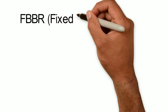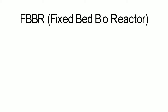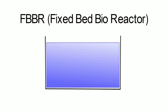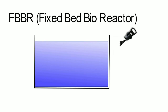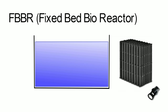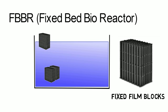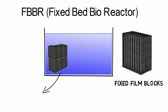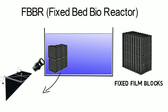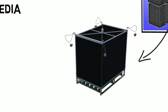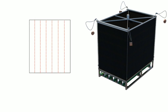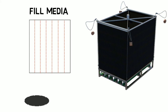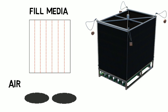FBBR — fixed bed bioreactors — work very similarly to MBBRs, with the difference that the biofilm is attached to fixed fill media blocks. The fill media blocks are usually arranged as submerged retrievable cages within the basin. Diffused aeration underneath the cage unit supplies the biofilm with the required oxygen and controlled scouring of the film media blocks.